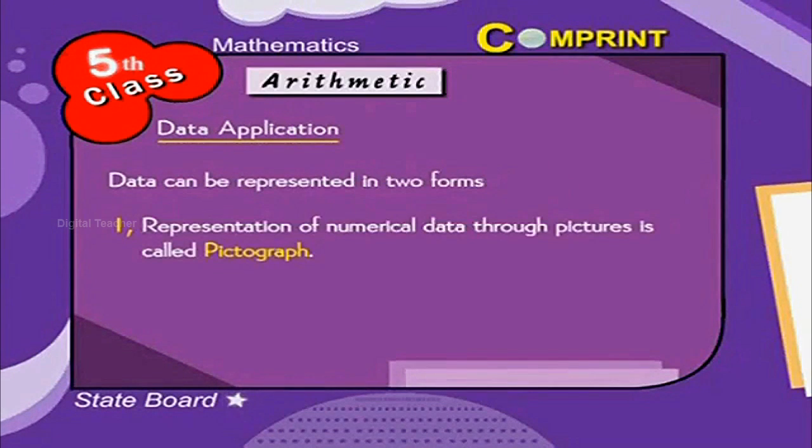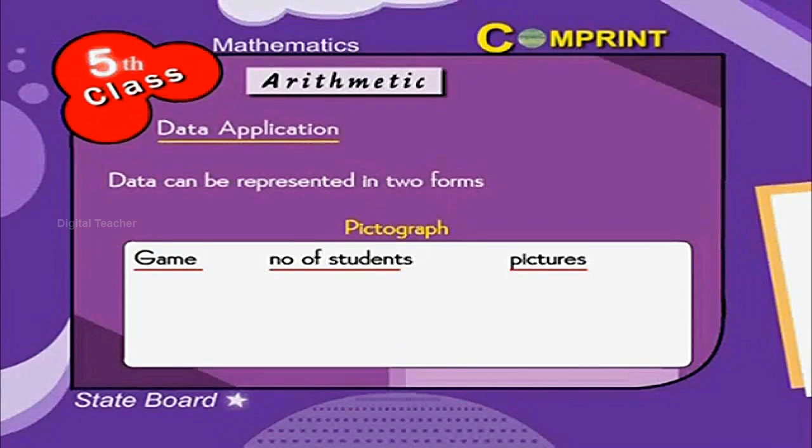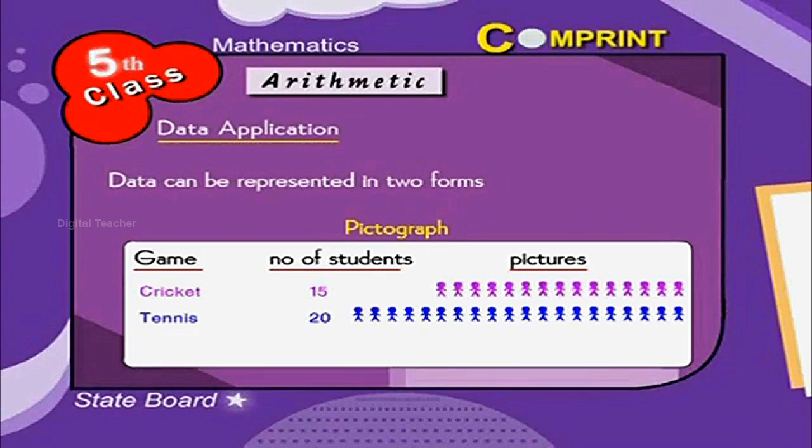Number 1: Representation of numerical data through pictures is called pictographs. For example, look at the table. Game, Number of students, Picture. Cricket 15, Tennis 20, Hockey 28.